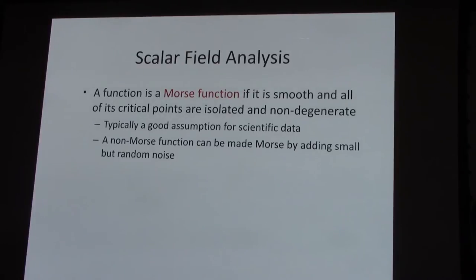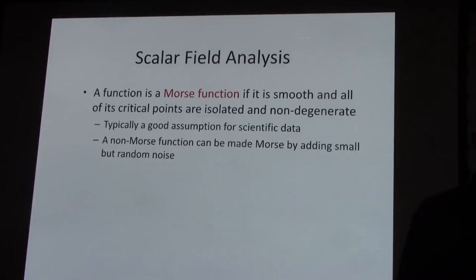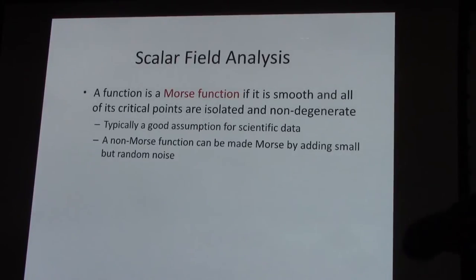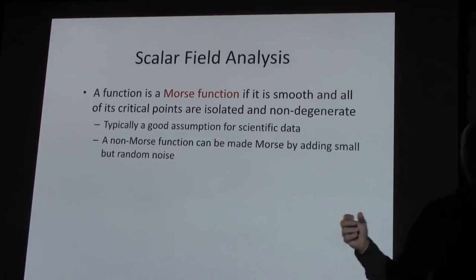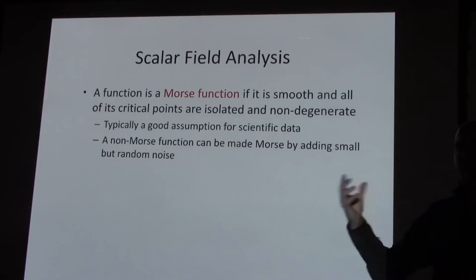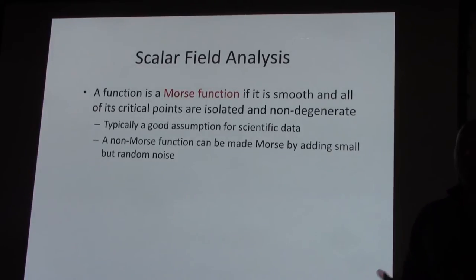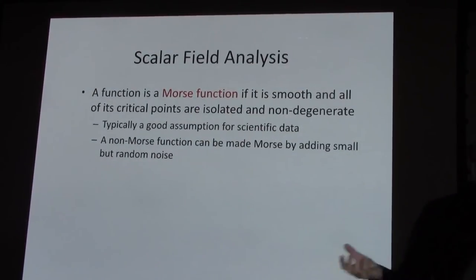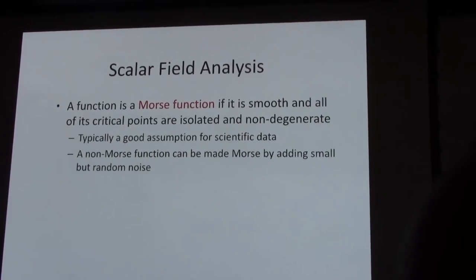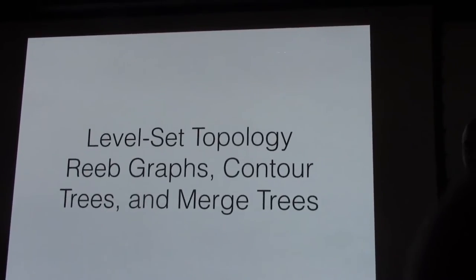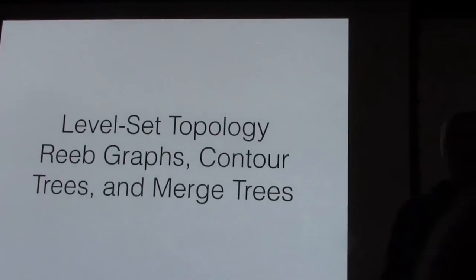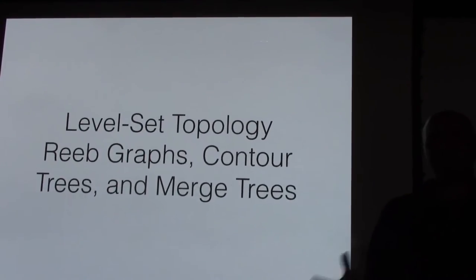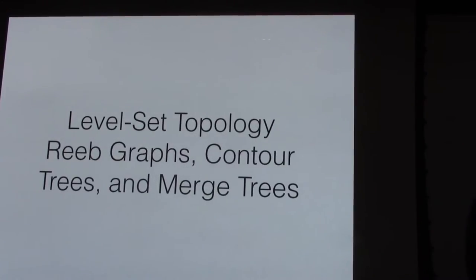Speaking of Morse-Smale complexes: a function is a Morse function if it is smooth and all of its critical points are isolated and non-degenerate. From Josh Levine's slides, this is claimed to be a good assumption for scientific data. I'd actually disagree — in some cases you have large regions where points are degenerate, for example a large flat region with zero gradient where you can't tell if it's a minimum, maximum, or saddle. To make a degenerate field non-degenerate you often have to add a little noise. Assuming your manifold is smooth and essentially C-infinity differentiable, you can apply these topological methods.